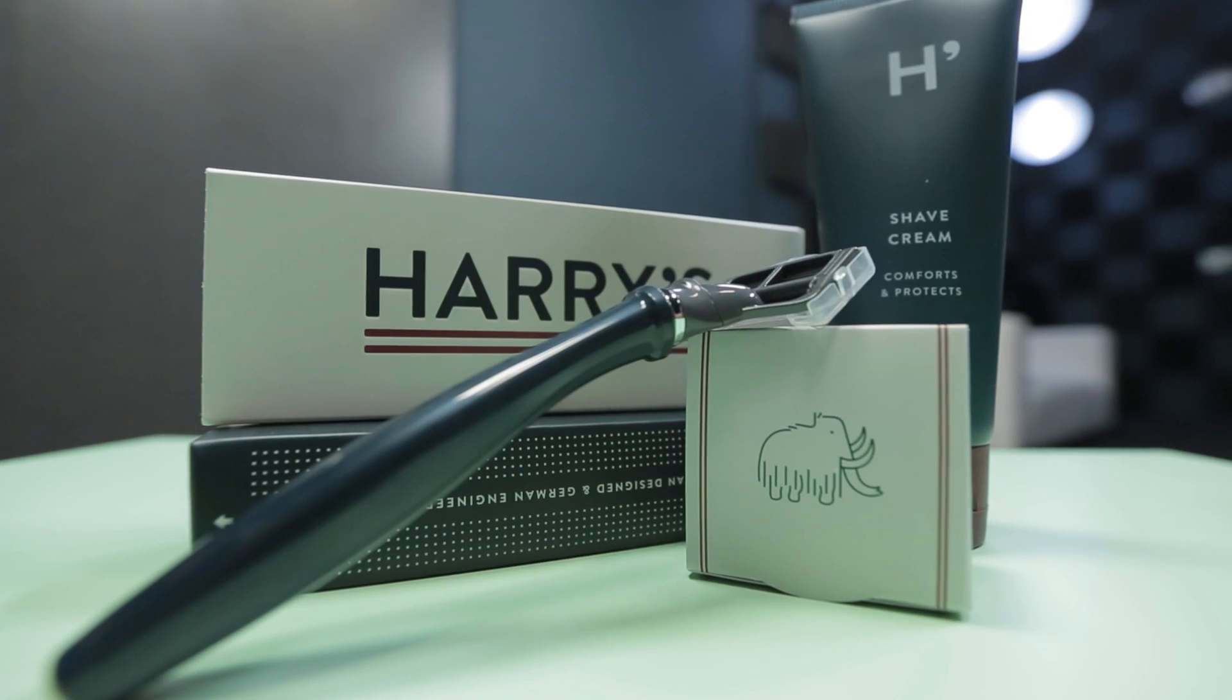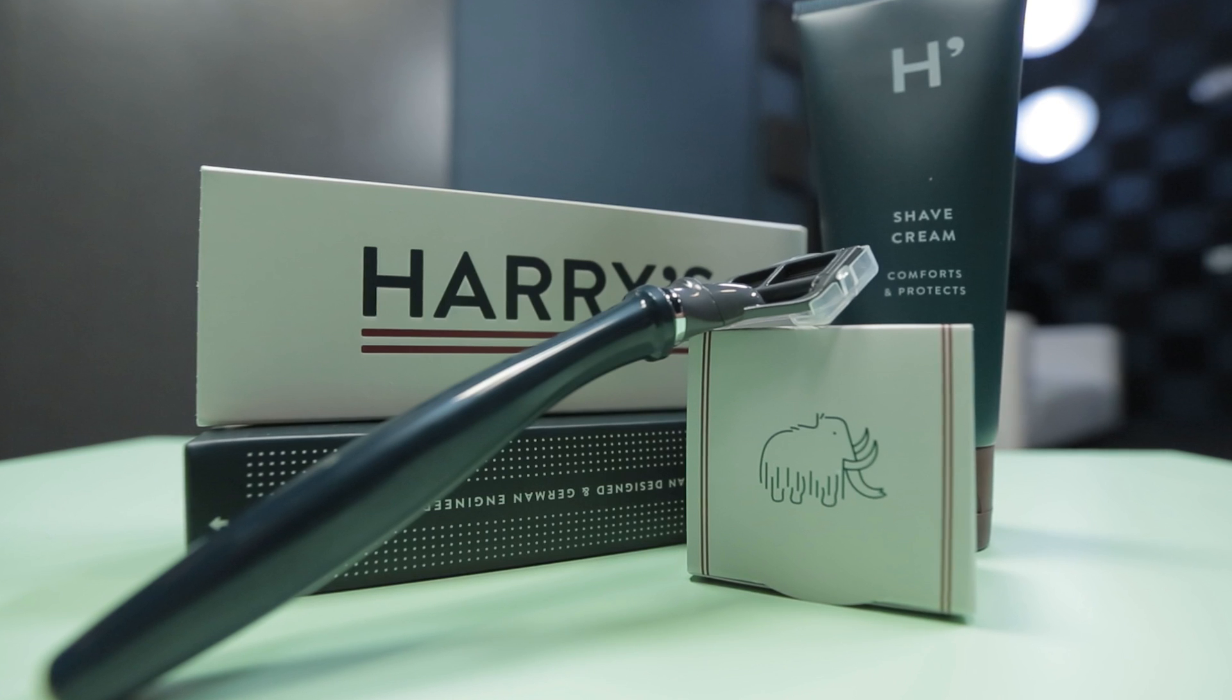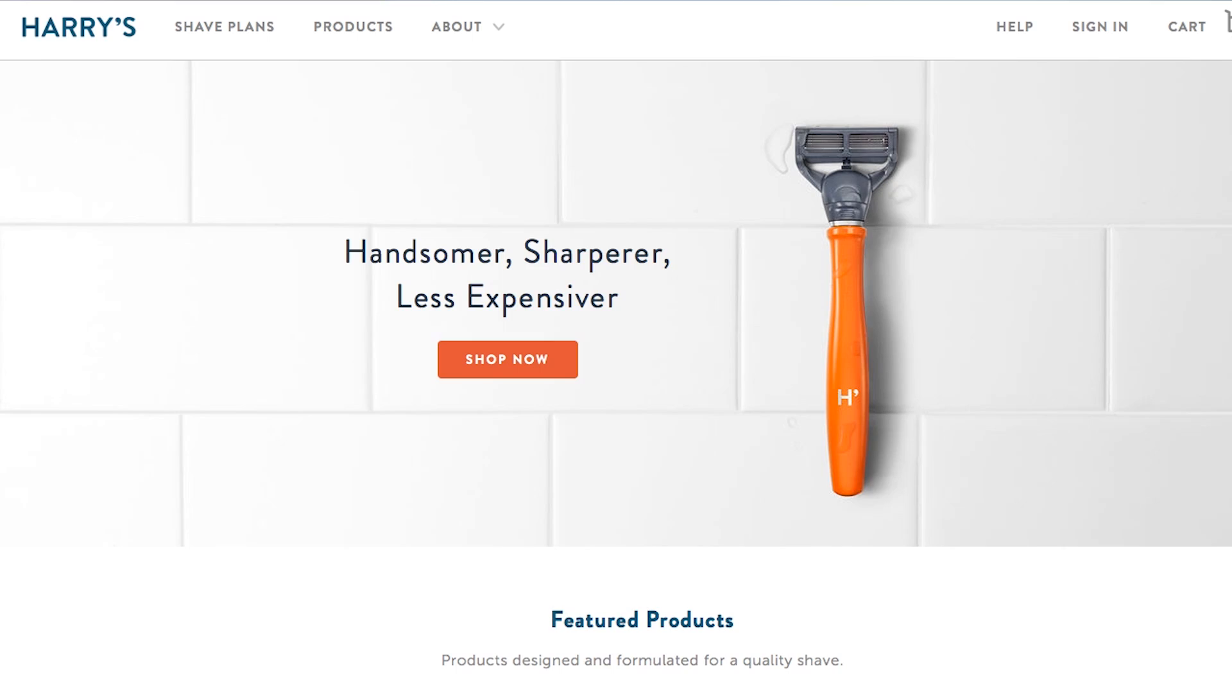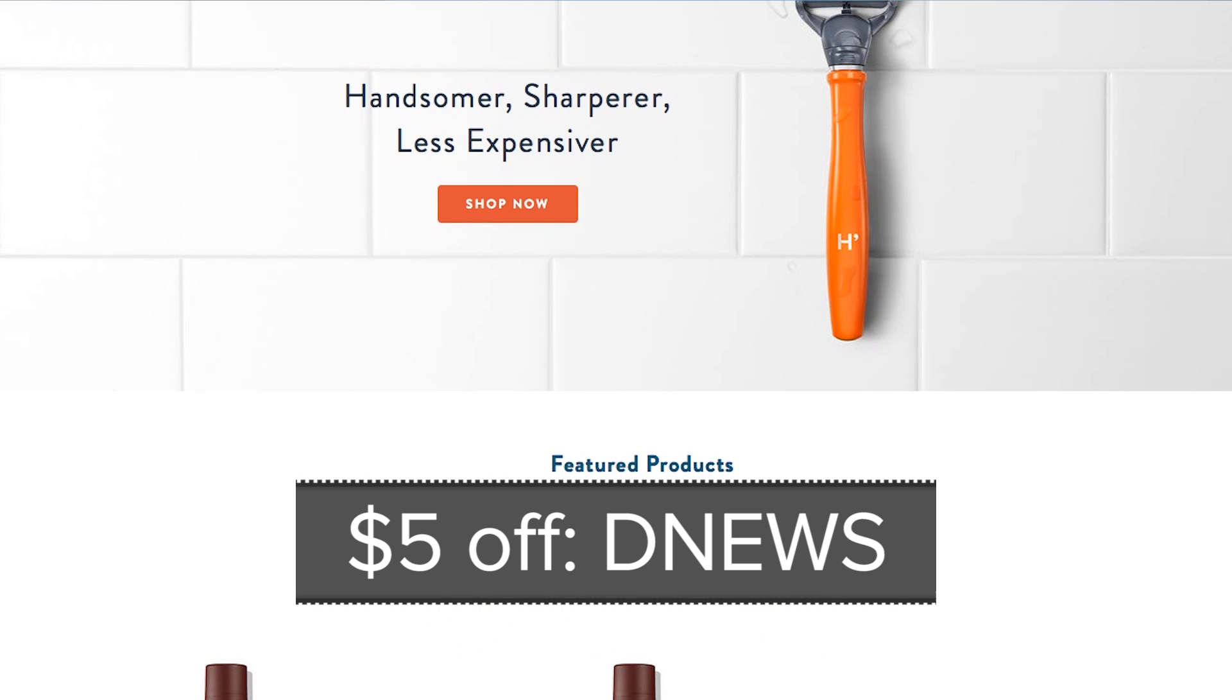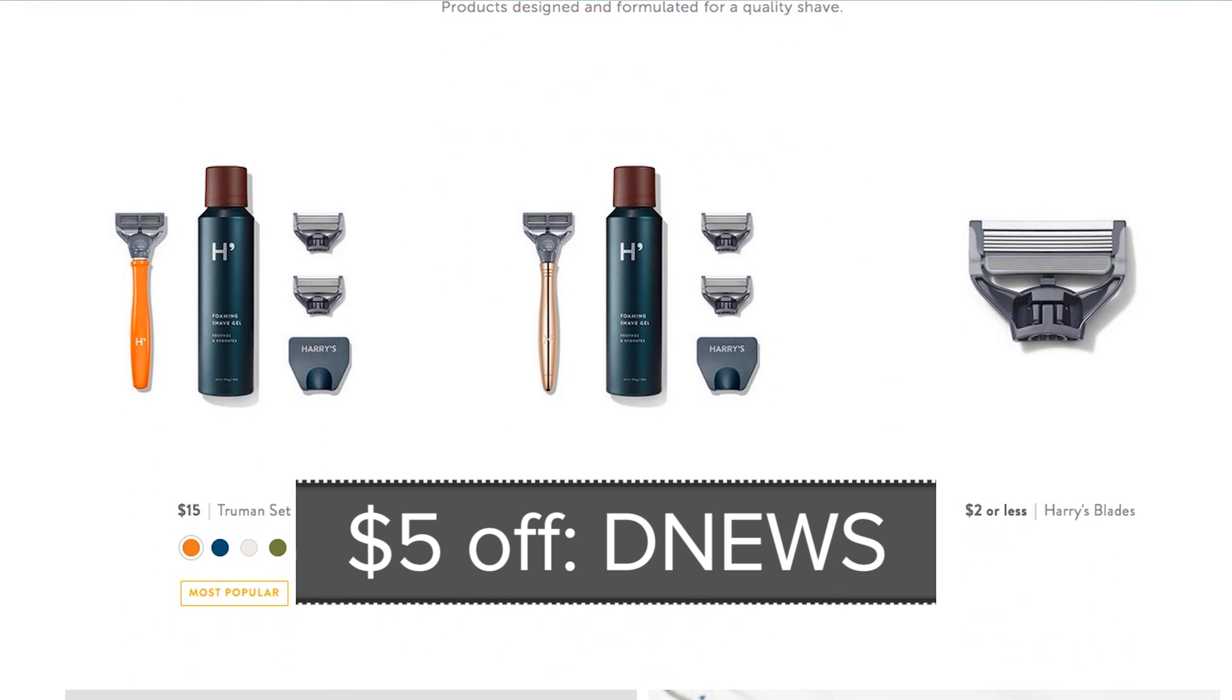Asteroids do occasionally fly by Earth, which some would call a close shave, but if you want a real close shave, try Harry's. We'd like to thank them for sponsoring this episode. I use Harry's twice a week, I shave my neck, not so much the beard part, but the neck definitely, and the blades are sharp, and the aftershave smells great. A starter kit includes three razors, a handle, and your choice of shave cream or foaming shave gel. I go with the gel. It smells really good. Go to Harry's.com now, get your starter kit for only 15 bucks, and with our code DNEWS, you can get five dollars off of that.